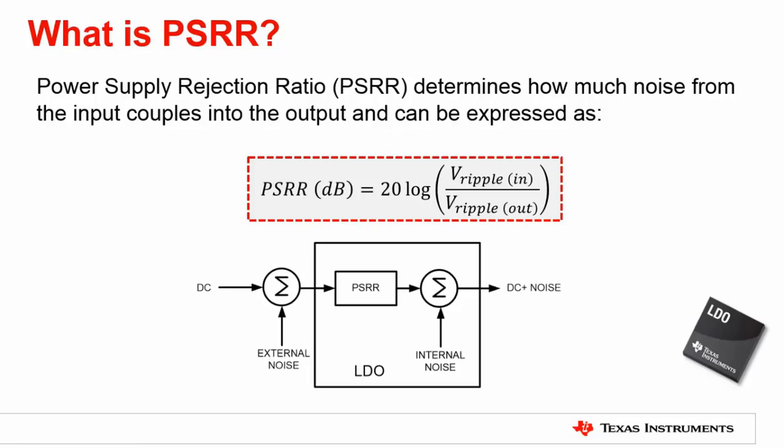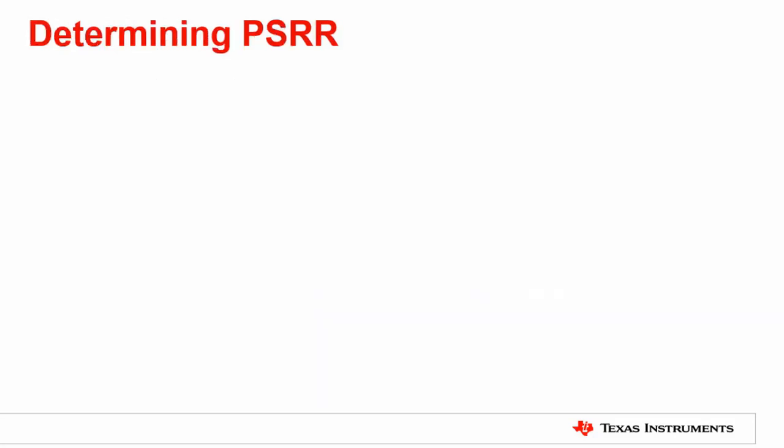Using the following high-level block diagram as an example, the DC-to-DC converter introduces switching noise which is conducted via the line. There may also be radiated noise being conducted at the input as well. The LDO will then reject some of the noise that was generated before adding some internal radiated noise. The resultant signal will then be a clean DC signal with minimal ripple.